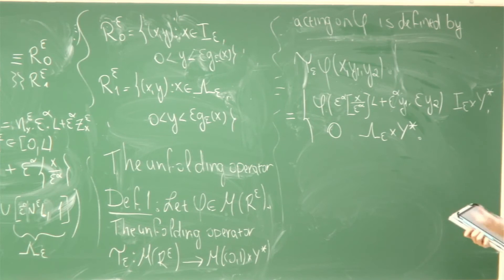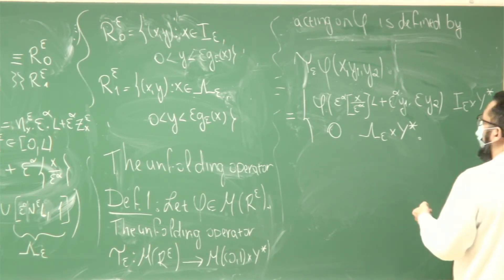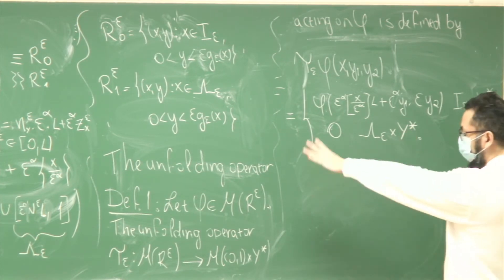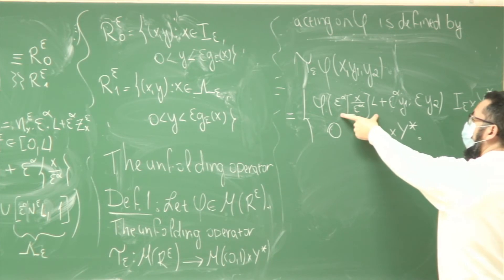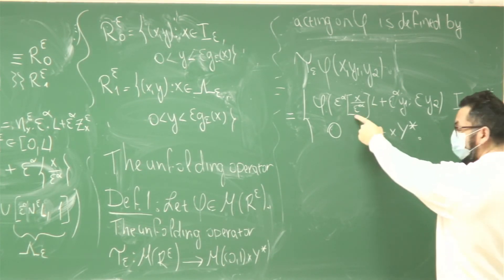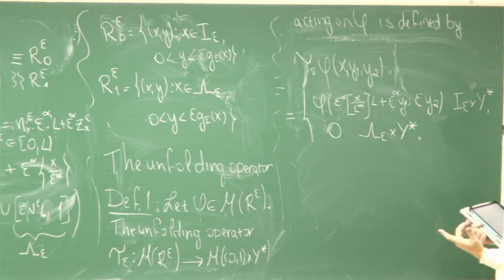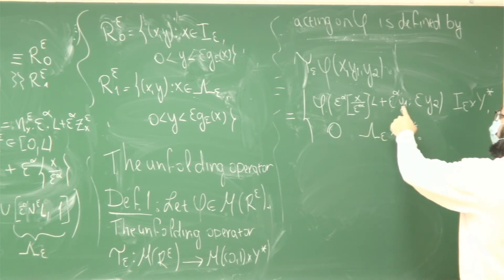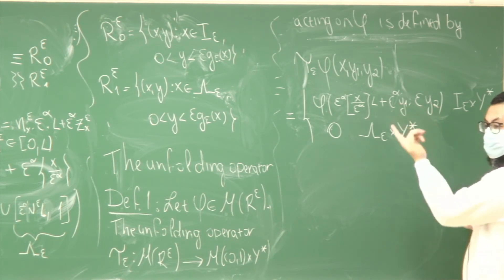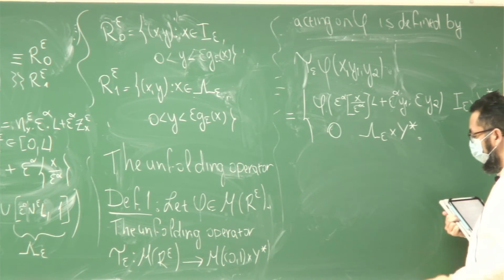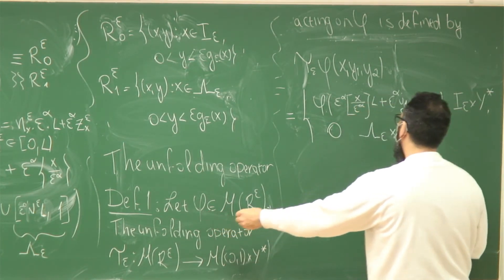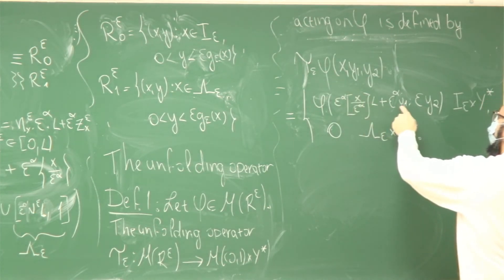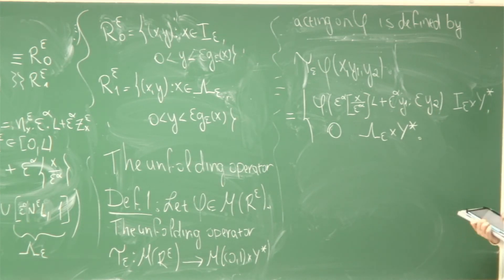Some remarks: suppose that phi has some regularity — C1 or anything. Since you get the floor function with respect to x, you can't differentiate that part. But you will be able to take derivatives in y1 and y2 with no problems. Basically, all the regularity that phi has will be inherited by T_epsilon of phi as a function of y1 and y2. This is something very important and gives us a lot.